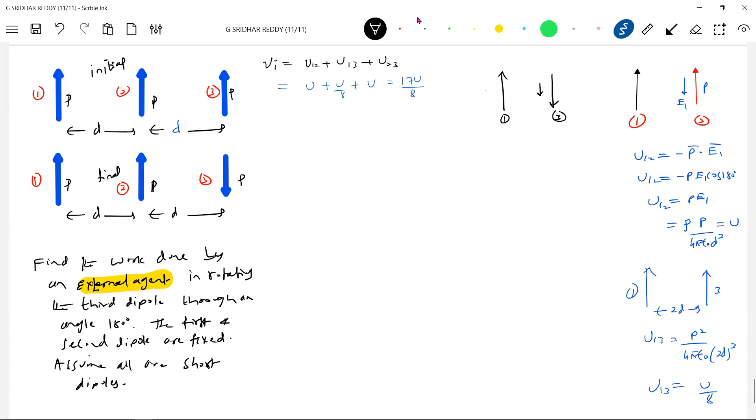I shall be right. U₁₂ should be equal to... U₁₂ will be same. Only one-three will change. Is it okay? Only one-three will become minus U by 8. No. Final potential U₁₂ dash, U₁₃ dash, U₂₃ dash. No change in one and two. As usual one and two will remain same.